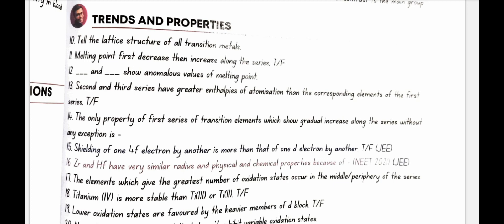MN and TC show anomalous values of melting point. Second and third series have greater enthalpies of atomization than the corresponding elements of the first series. Yes, true.